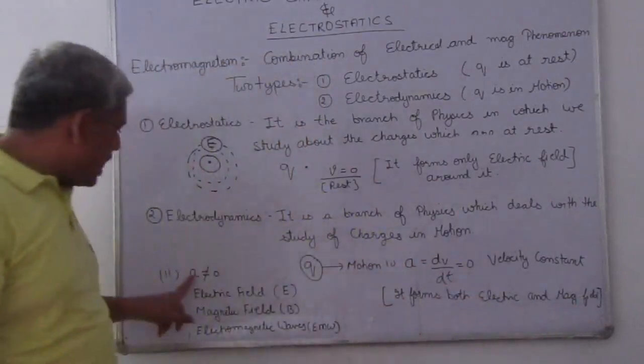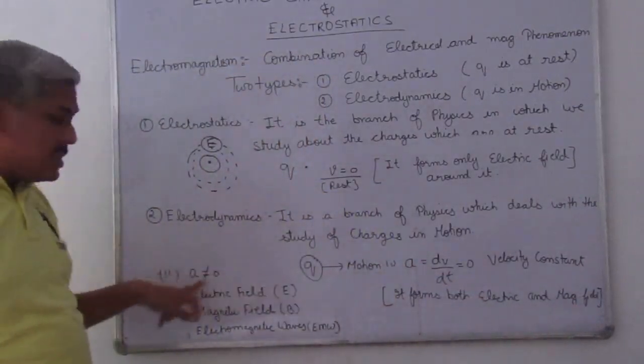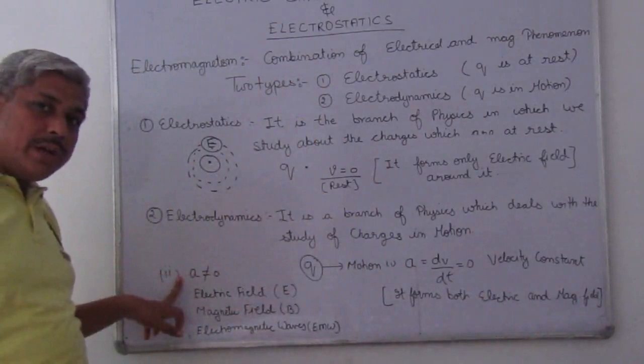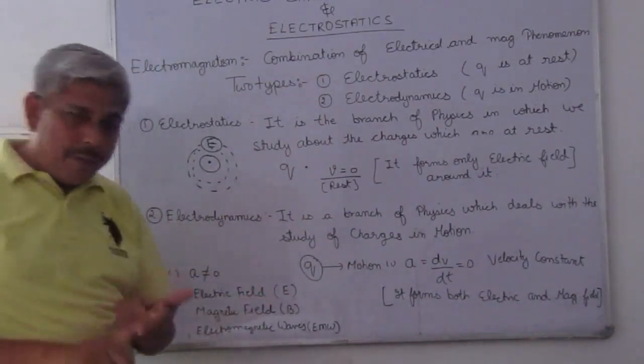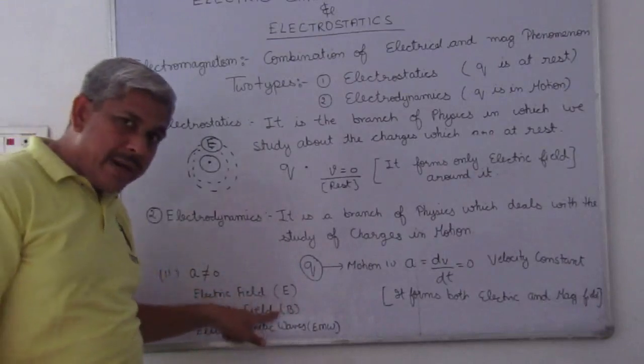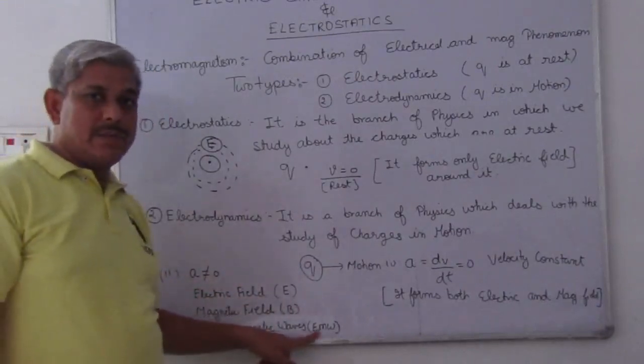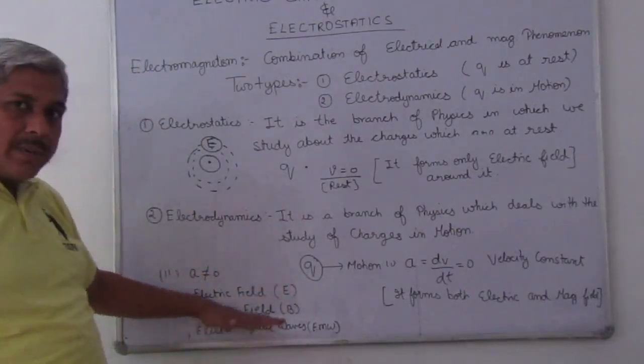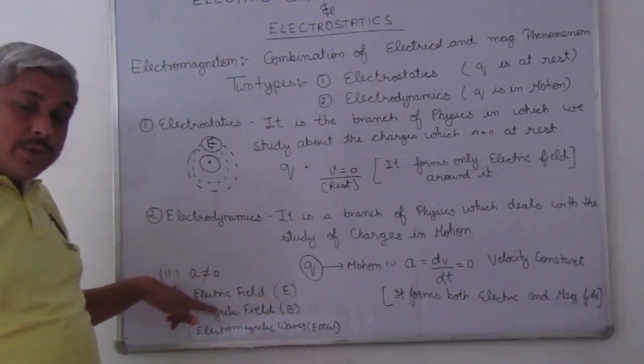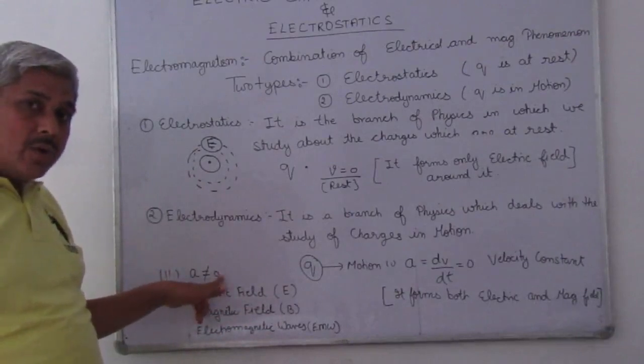In the same way, when the charge is in motion but acceleration is not equal to zero, that means velocity is not constant. It produces electric field E, magnetic field B, and electromagnetic waves. All three types are produced when the charge is in motion and the acceleration is not equal to zero.